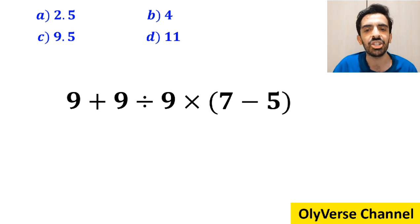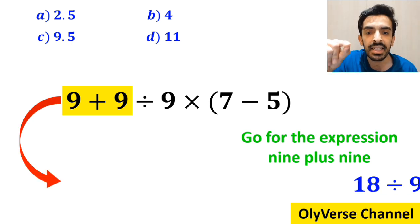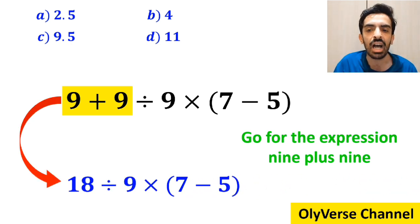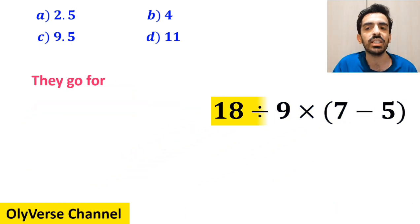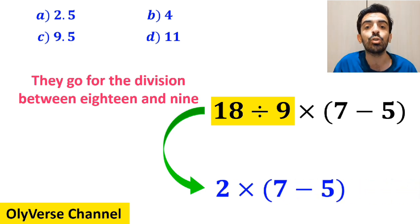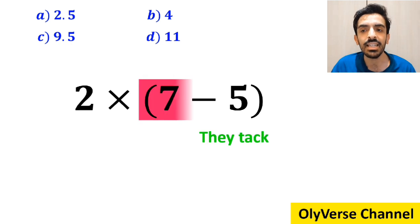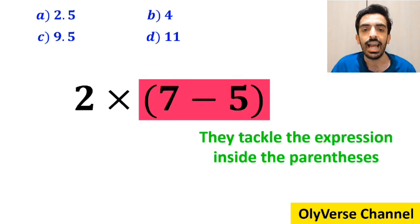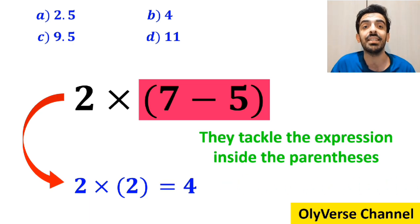Many people when solving this question first go for the expression 9 plus 9, and write this expression as 18 divided by 9 times 7 minus 5 inside the parenthesis. In the next step, they go for the division between 18 and 9, and this expression simplifies to 2 multiplied by 7 minus 5 inside the parenthesis. In the final step, they tackle the expression inside the parenthesis and write it as 2 times 2, which ultimately gives them the answer 4.